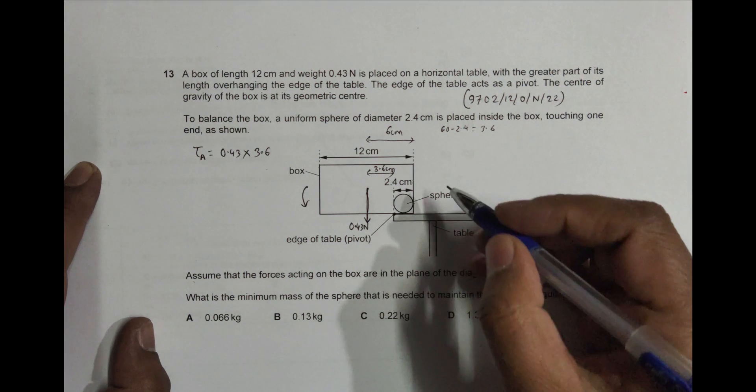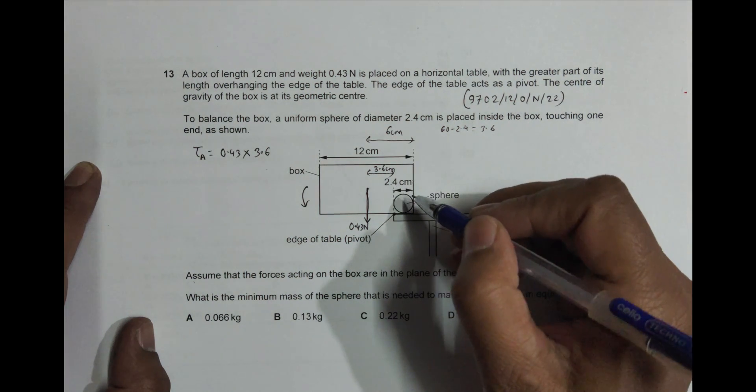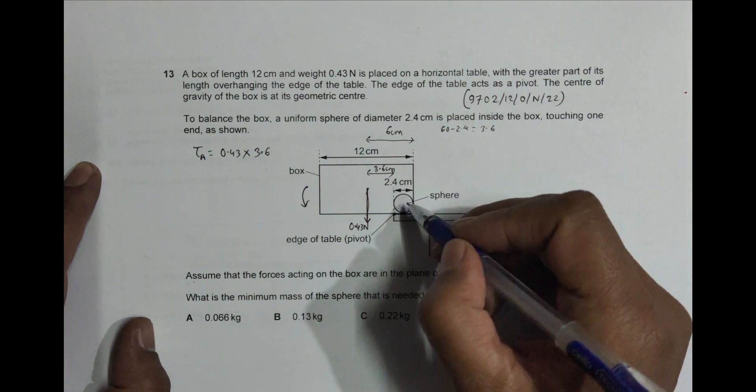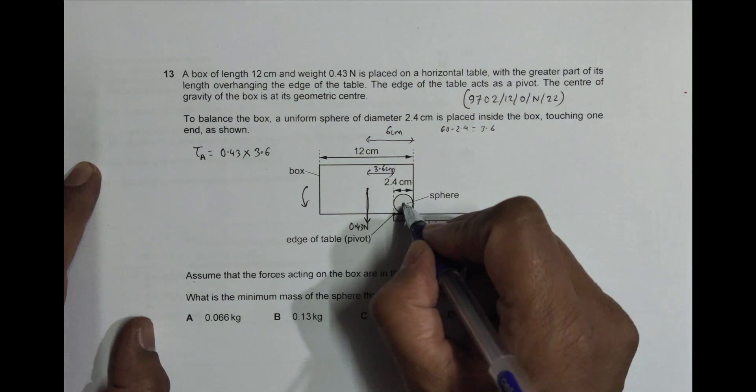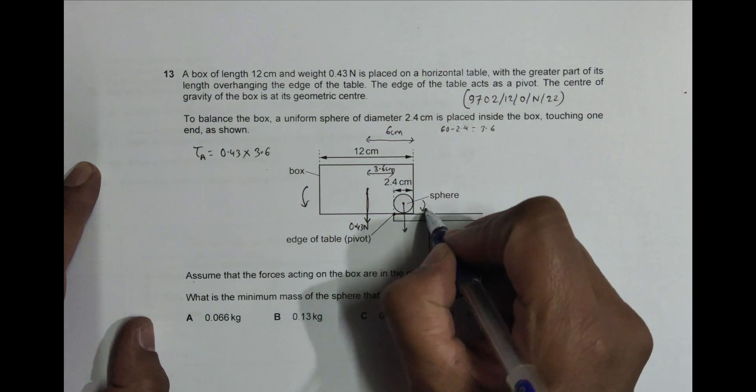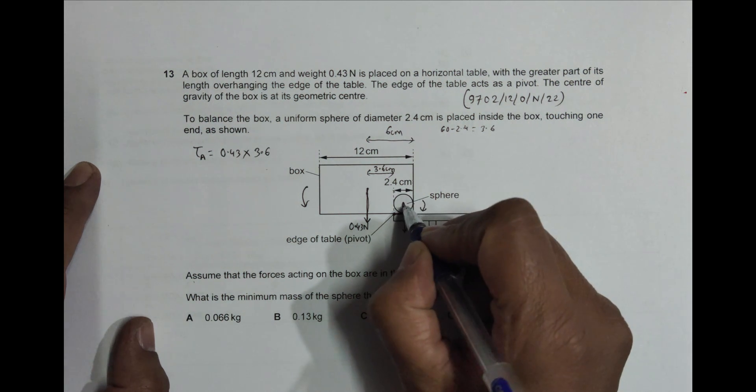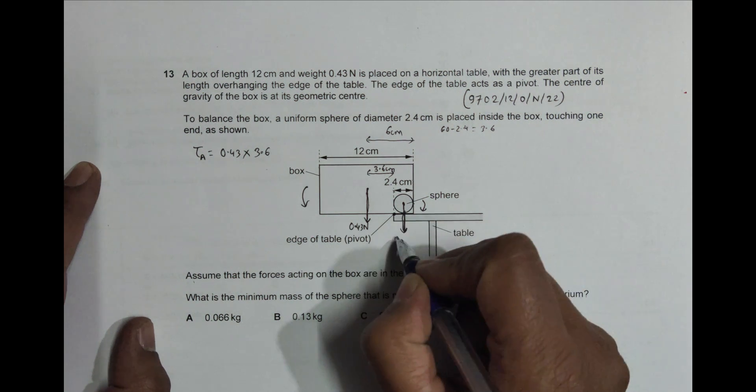Now the clockwise rotation or clockwise torque on this thing is given by the sphere. The weight of the sphere acts like this and this will try to move this thing like this. So this is the weight of the ball or the sphere, and that's equal to mg.